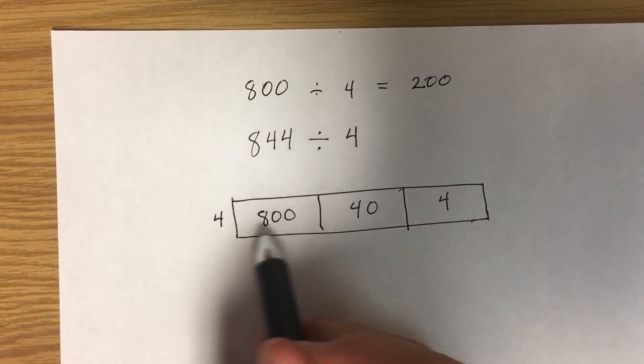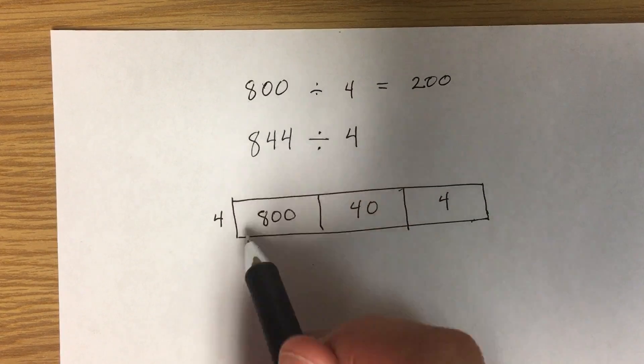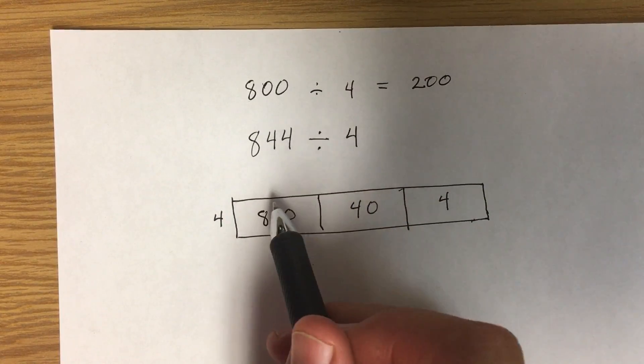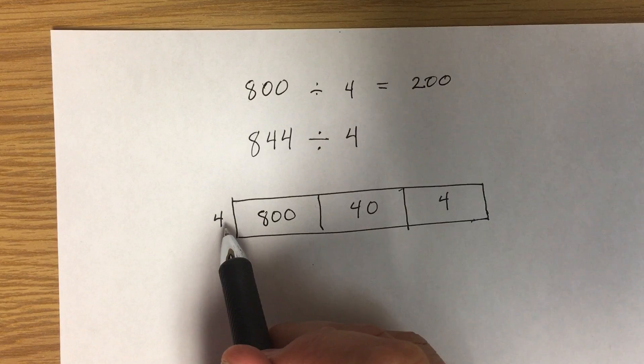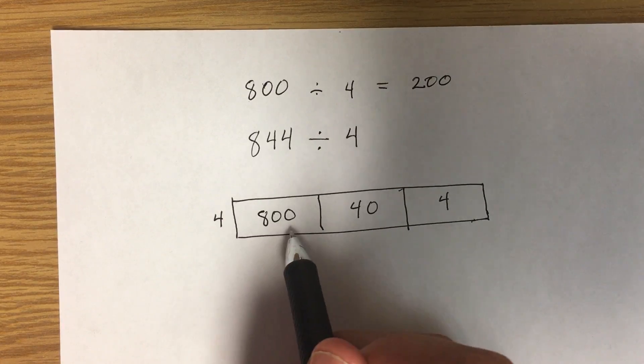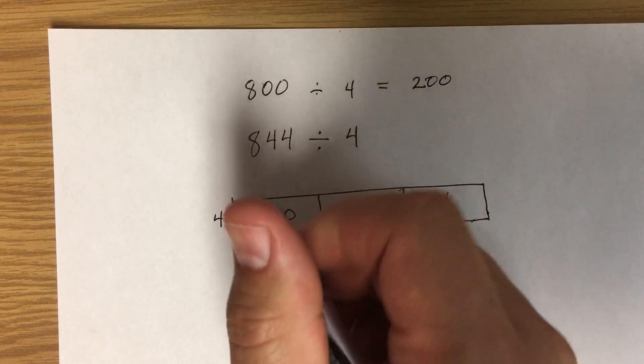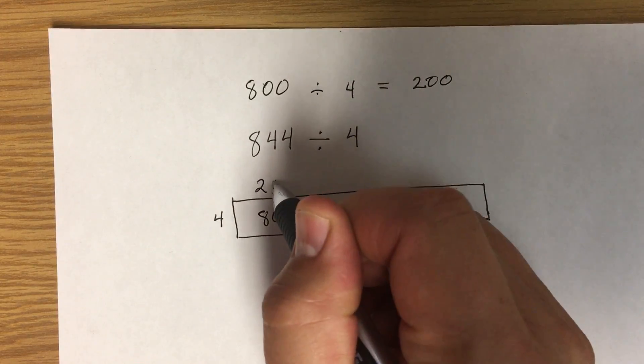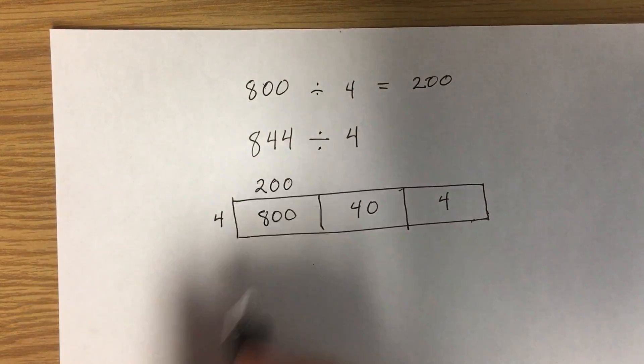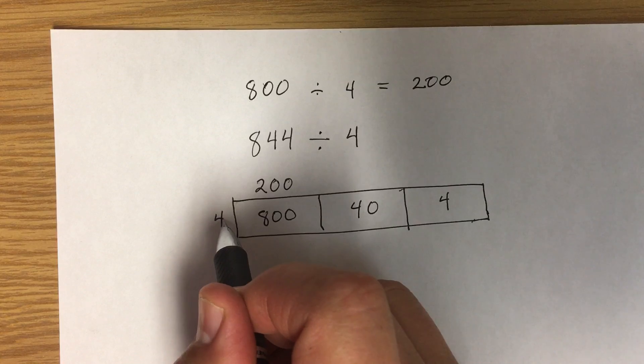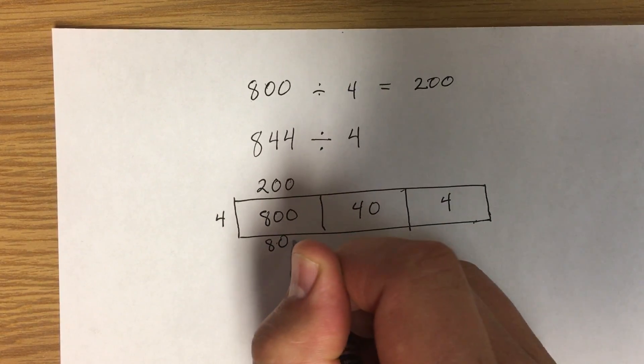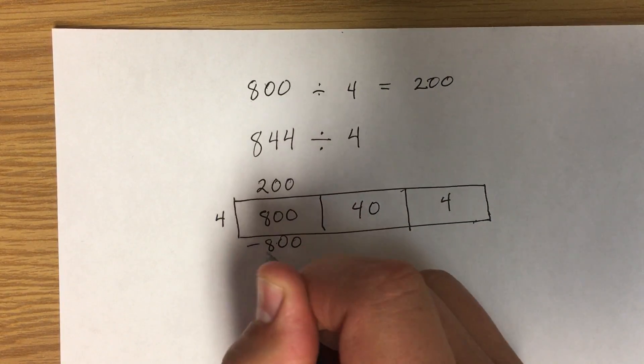So what I want to do in the first box is I want to figure out how many hundreds times 4 can fit into 800. So I can see that 200 times 4 will equal 800, which fits into 800 nicely. So then I subtract.